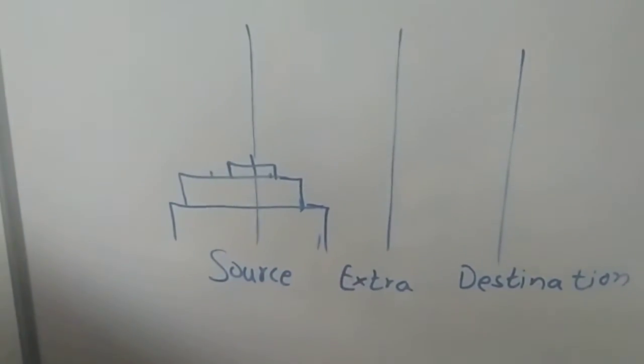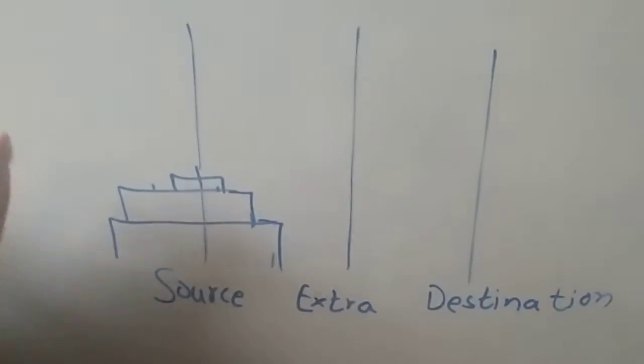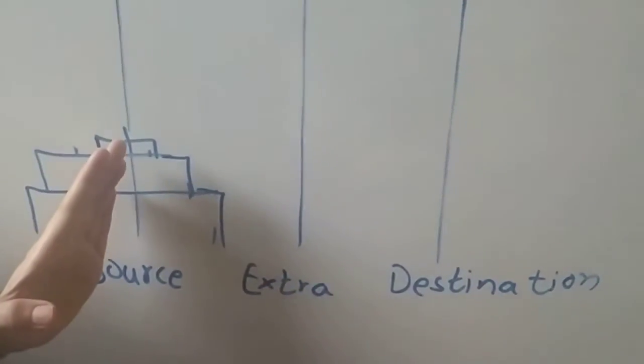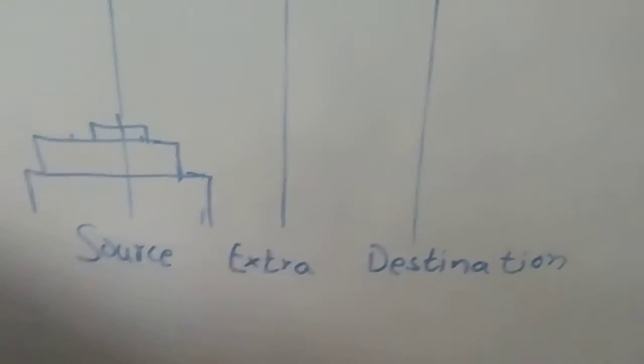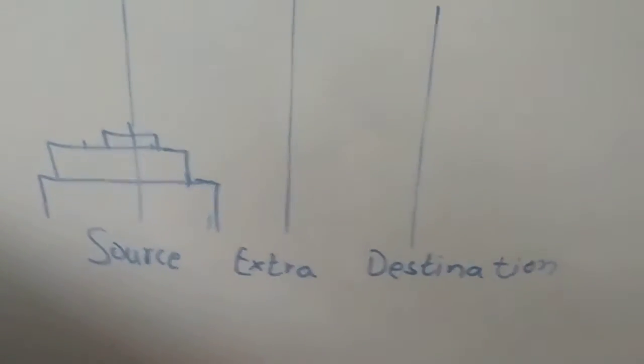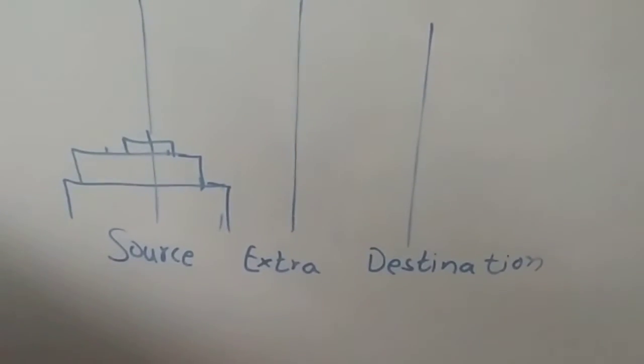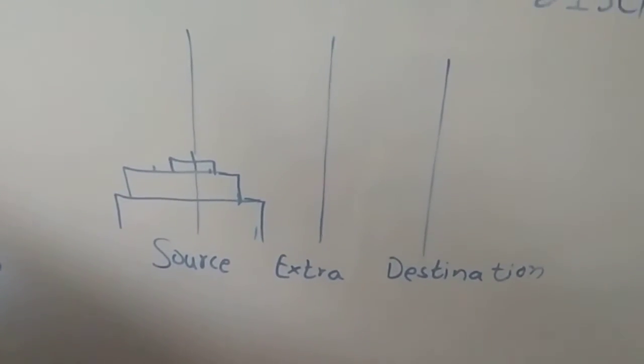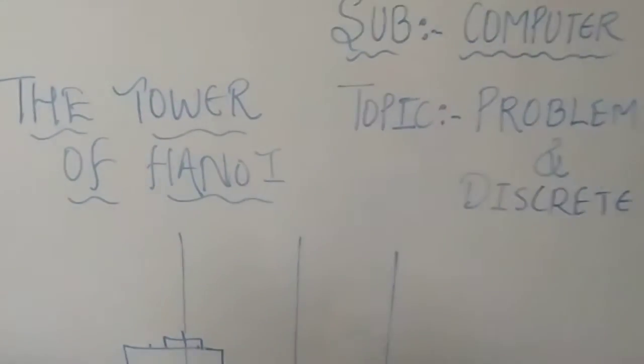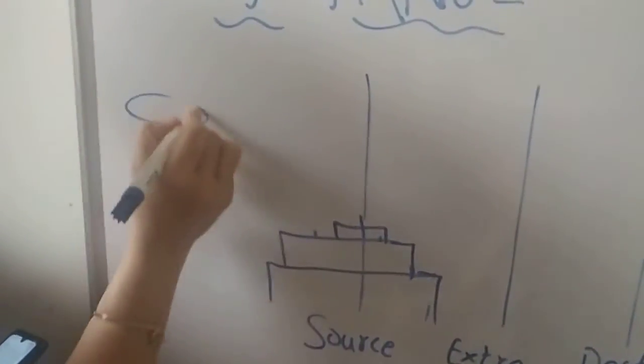But we have to go ahead with steps. There are some rules which we have to follow to move the disc from source to destination. What it is told is that the puzzle starts with the disc in a nice stack in ascending order of size on one rod. The smallest at the top and thus making a conical shape. This is like a cone shape.